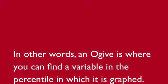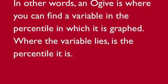In other words, an ogive is where you can find a variable in the percentile in which it is graphed. Where the variable lies is the percentile it is.